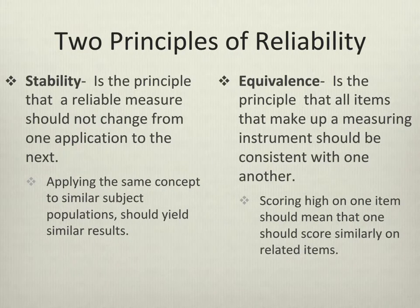There are two principles of reliability that apply in different kinds of circumstances. The first principle is stability. Stability is when you're looking at whether your measure is reliable across time or from application to application, from person to person. Are you applying the same concept to similar subject populations and receiving similar results? If a measure is unstable, it's unreliable because people aren't responding to it in the same way. It could also be caused by things like minor changes in wording or changes in question order.